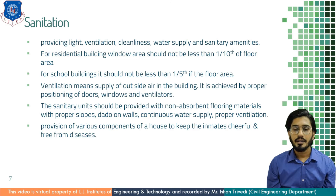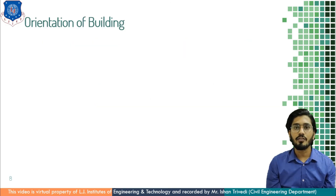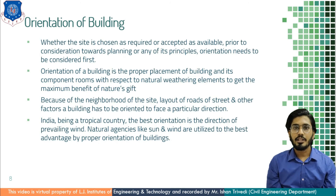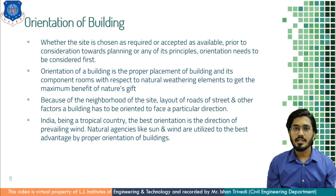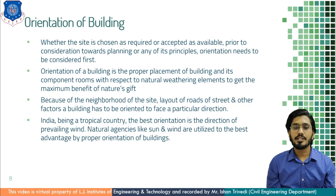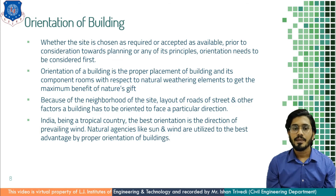Now starting another theory — that is orientation of a building. While planning a building, the first consideration is the orientation of building. This orientation can be achieved by considering various phenomena, but first we need to understand the site. The site can be of our choice or we have to accept it as available. Orientation of a building is the proper placement of the building and its components such as various rooms with respect to natural weathering elements to get maximum benefits of nature's gifts. Because of the neighbourhood of the site, the layout of roads, streets, and other factors, a building has to be oriented to face a particular direction.